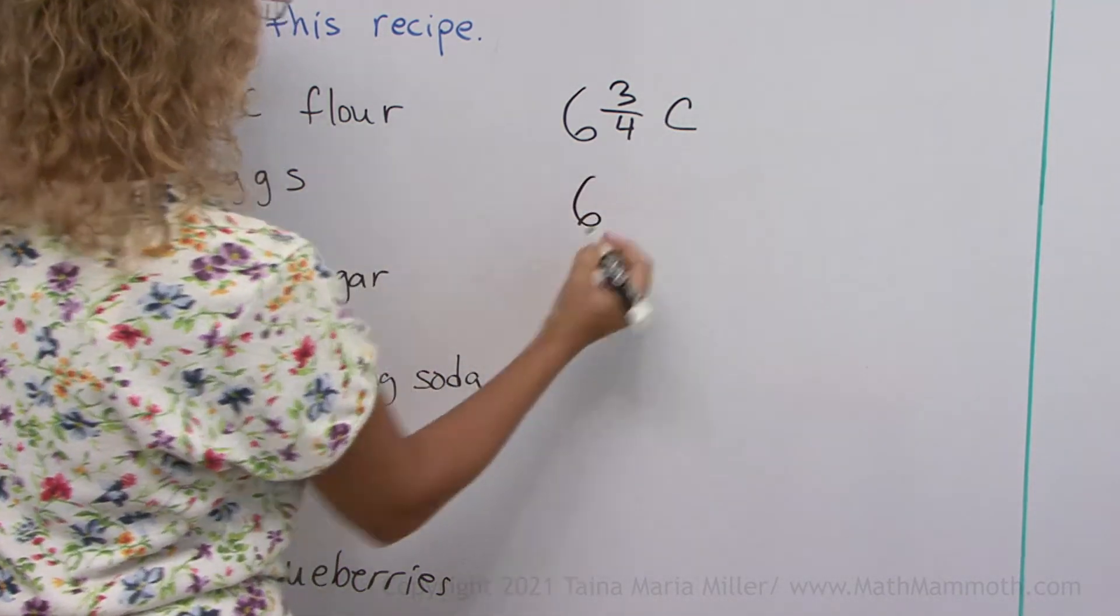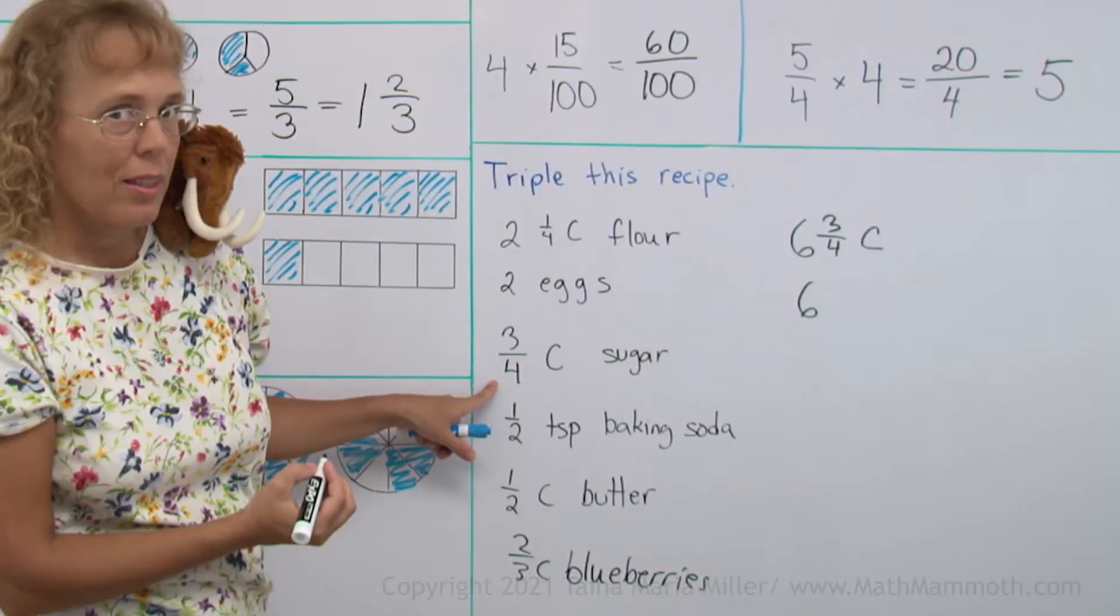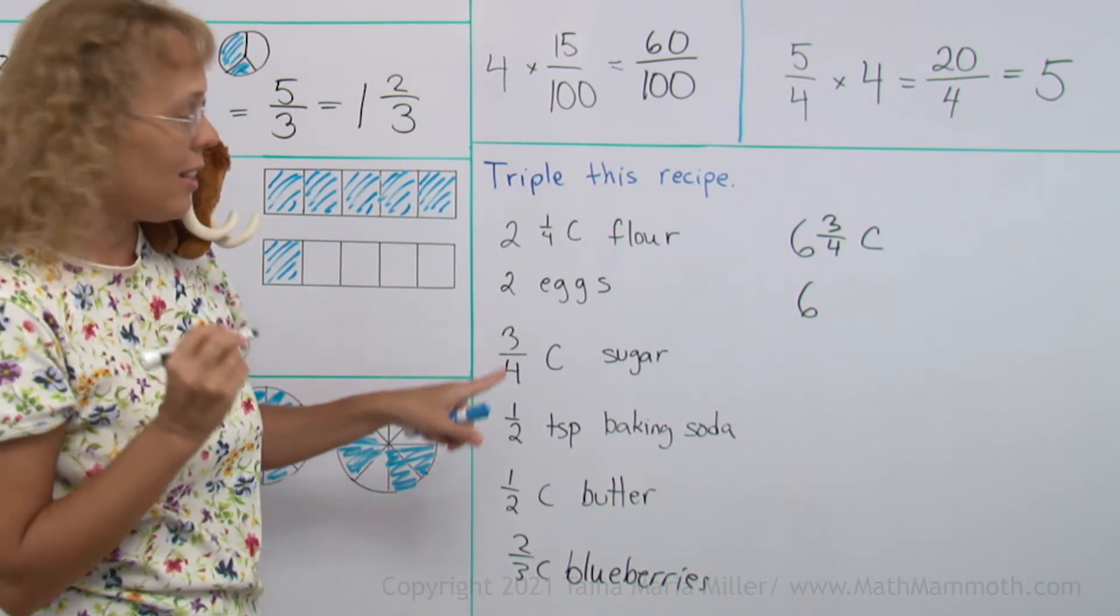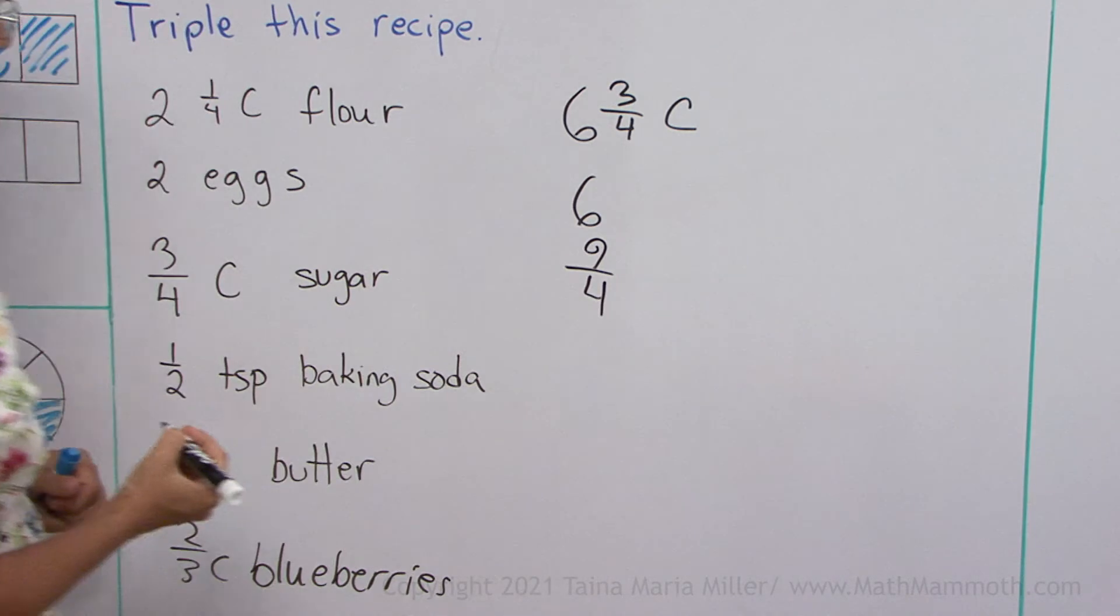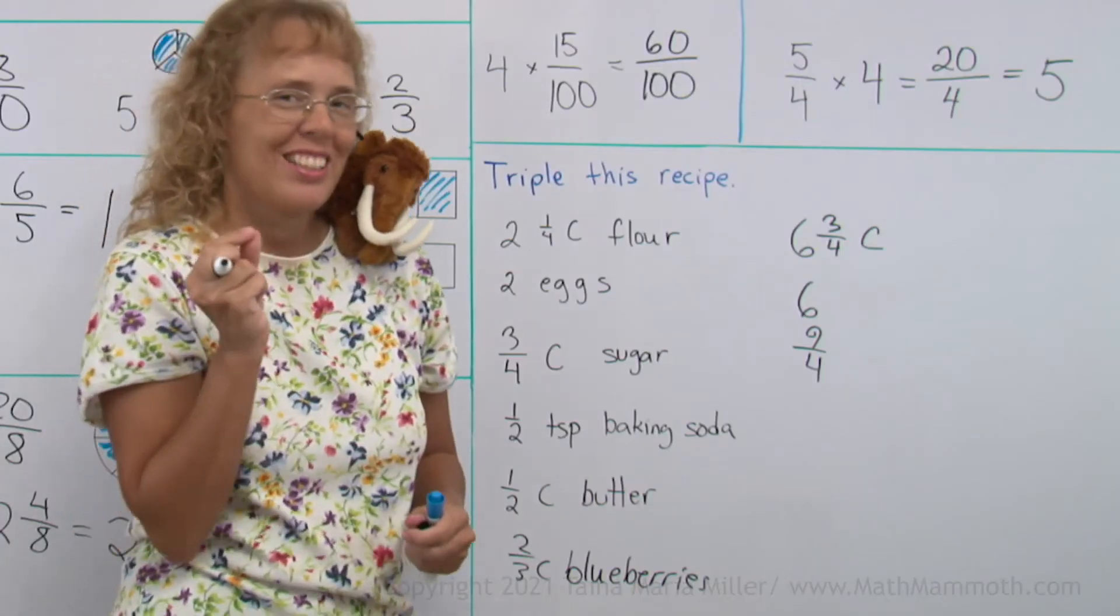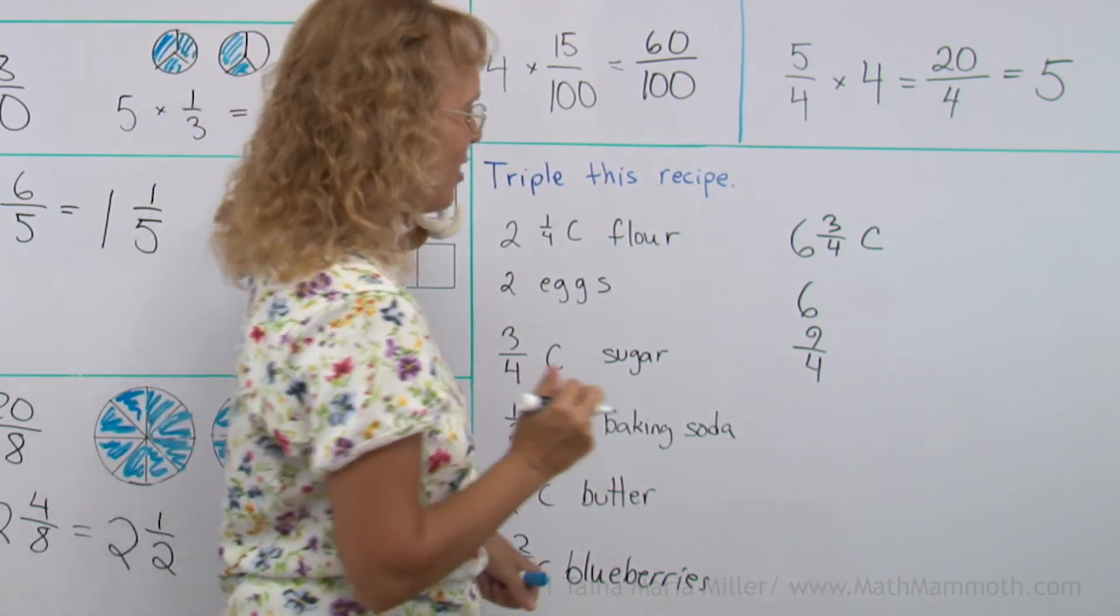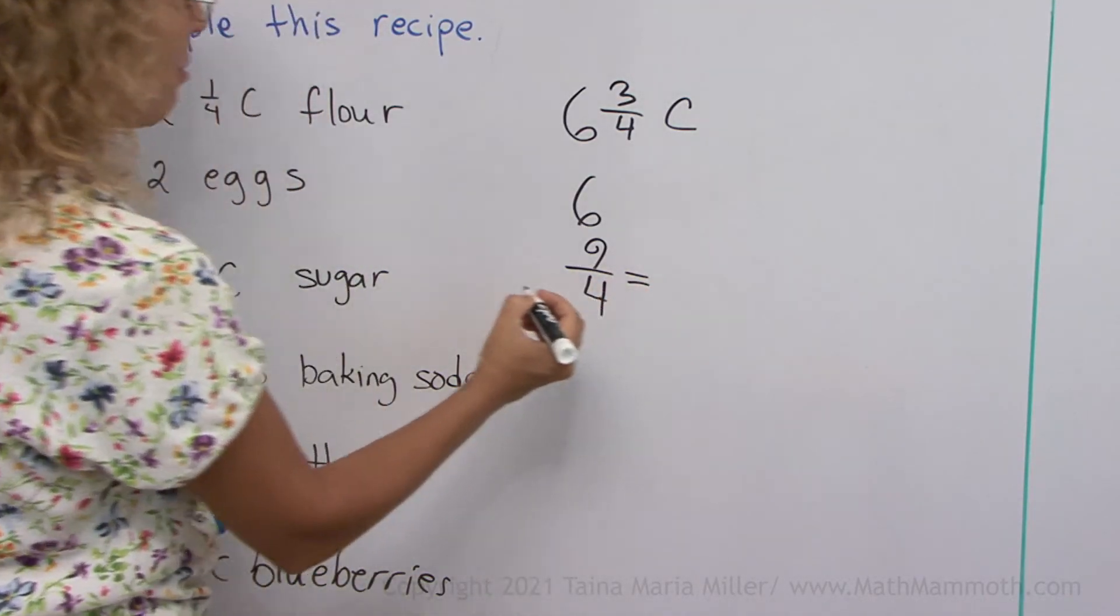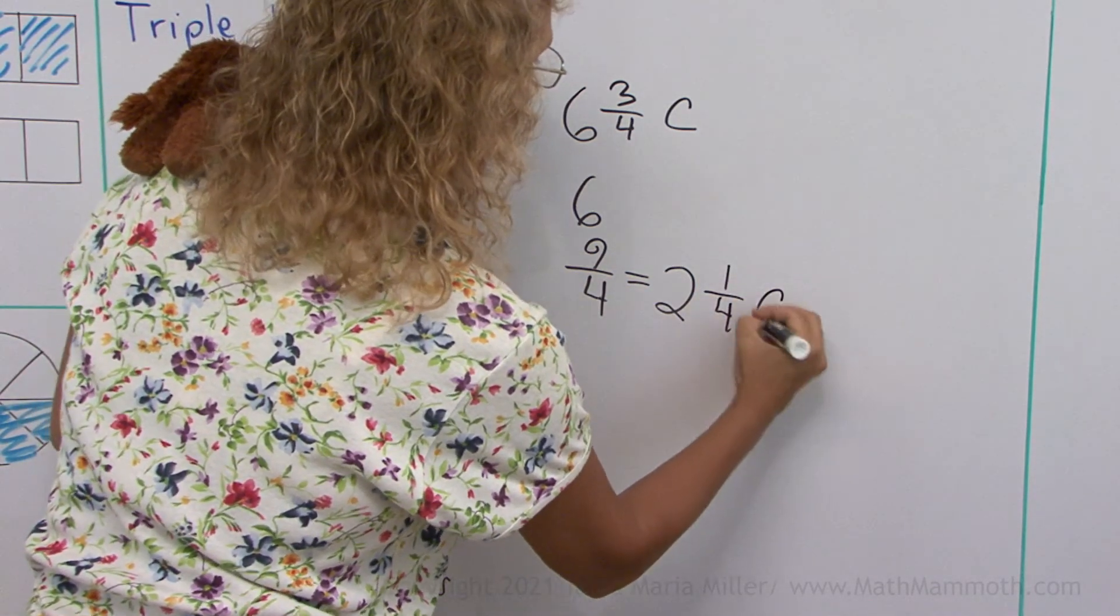2 eggs times 3. Well, 6 eggs. And this one times 3. Okay. You go 3 times 3. 3 times 3 is 9. And that's how many fourths we get. 9 fourths cup of sugar. But, okay, here we need to change this into a mixed number. We wouldn't have 9 fourths in a recipe. This makes how many whole cups? Should be 2, right? And 1 fourth cup.